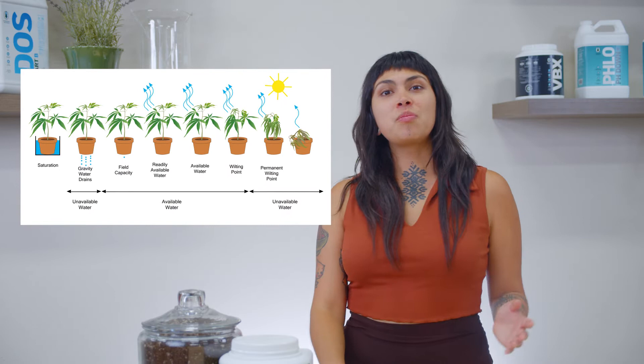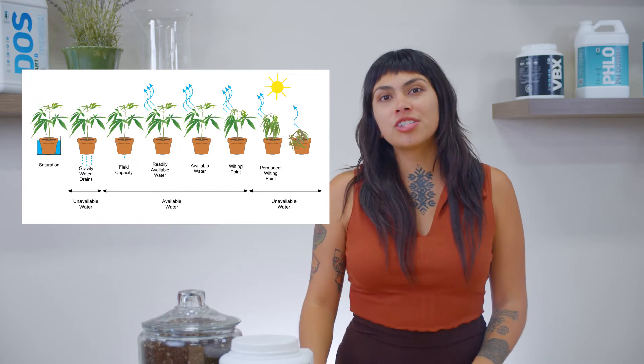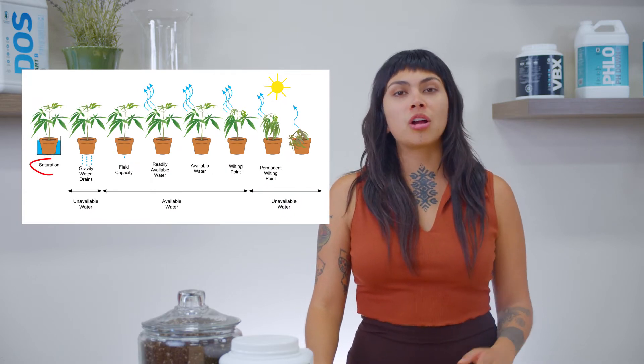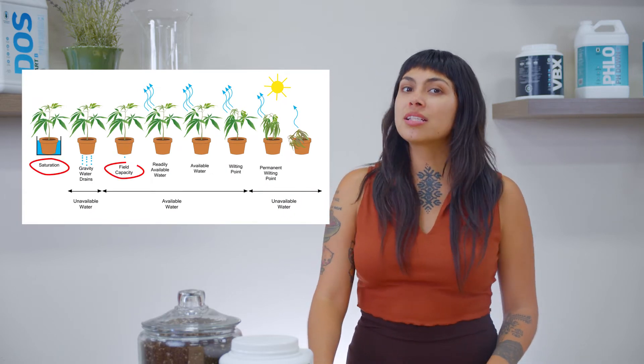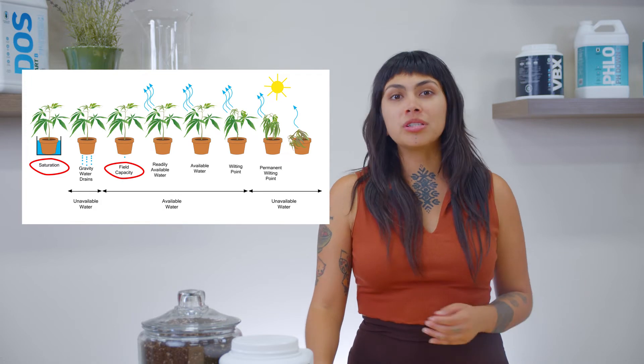How much water does your media hold? It's an important question to ask, and the answer could help you avoid damage from overwatering, as well as avoid the permanent wilting point. Key points to understand after watering events are saturation, field capacity, and wilting point.